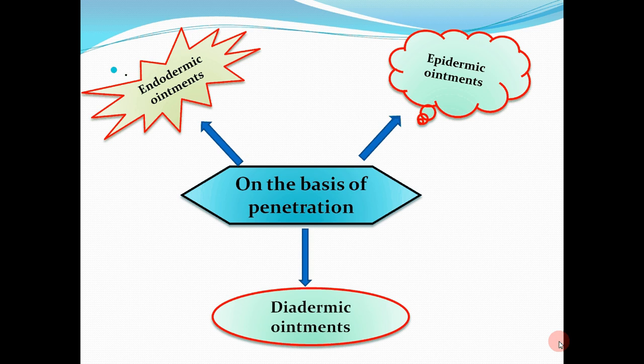The second sub-class is endodermic ointment — 'endo' means inside and 'derma' means skin. These ointments release medicament that penetrates into the skin; they are partially absorbed and act as an emollient. The third is diadermic ointment — these ointments release medicament that passes through the skin and produces a systemic effect.